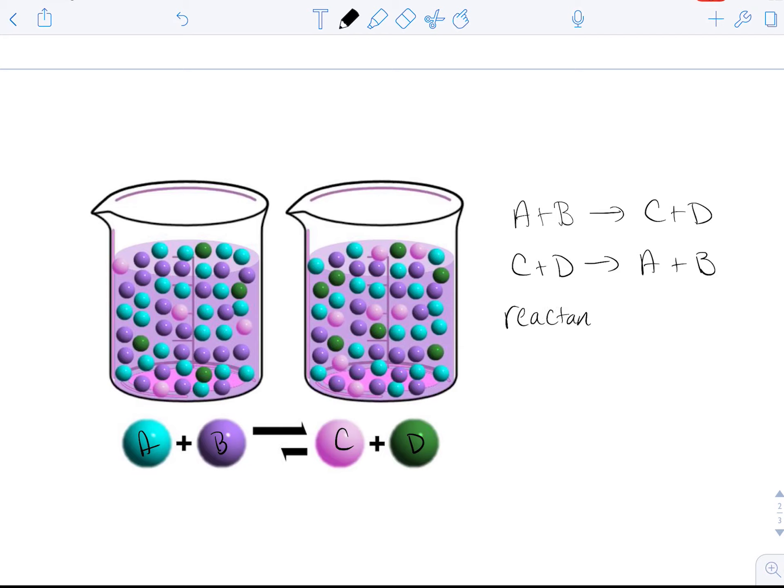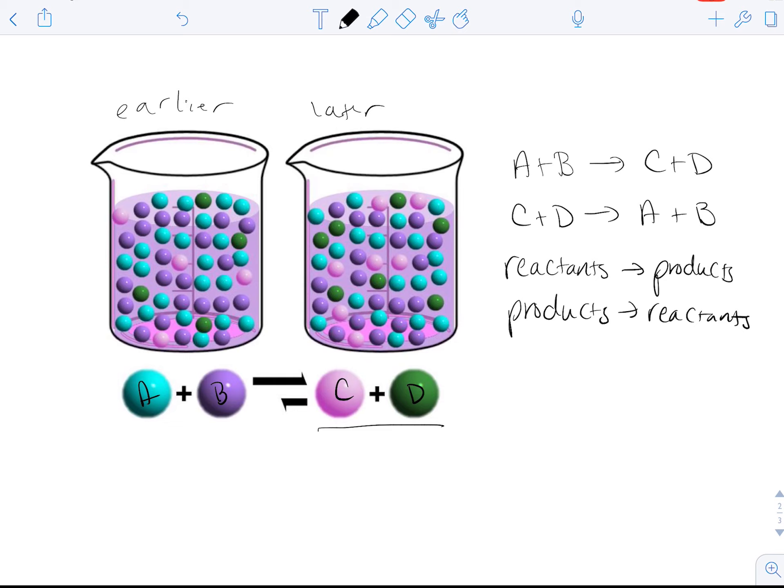Reactants to products and then products to reactants. So this is just two points along the reaction. This is earlier and this is later. So as they react more and more, we produce more C and D and then C and D go back and reproduce A and B. So we would write it as A plus B is in equilibrium. This double barbed arrow means equilibrium with C plus D. So as we form C and D, they react to produce A and B again. And this will keep on occurring until we get to a steady state.